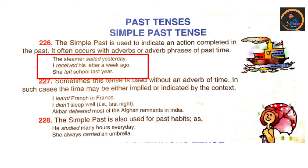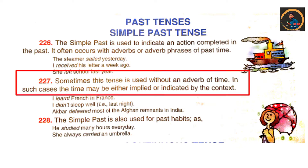Yesterday, a week ago, last year — these are adverb phrases. In simple past tense we use the second form of the verb. Sometimes this tense is used without an adverb of time. In such cases the time may be implied or indicated by the context.